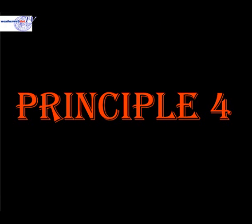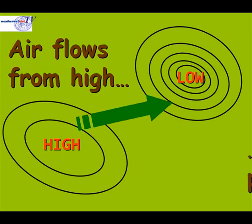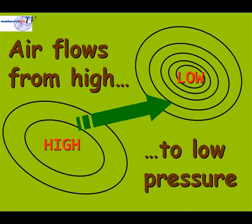Principle 4. Air will flow from high to low pressure. Now it doesn't flow just directly from that area of high to that area of low pressure — it's somewhat deflected due to various effects. But just think of it as air flowing from high to low pressure. I call this the vacuum cleaner effect, because when you switch on a vacuum cleaner, effectively what the cleaner is doing is creating an area of low pressure inside it, so the higher air pressure outside forces its way into the vacuum cleaner.